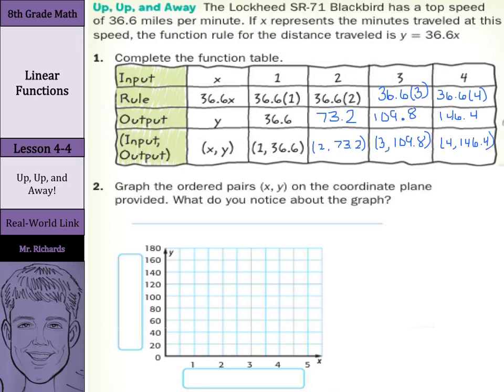Now, we want to graph the ordered pairs x, y on the coordinate plane provided. And then we'll answer the question, what do you notice about the graph? Our x-axis, 1, 2, 3, 4, 5, is our number of minutes. Our y-axis is our distance traveled.